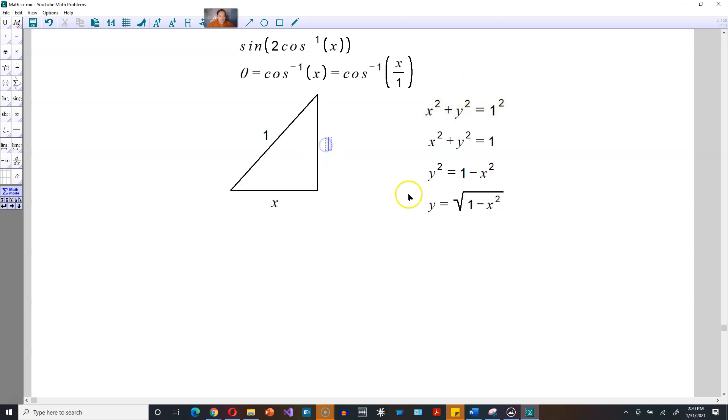So now this expression, square root of 1 minus x squared, labels the vertical side in the triangle, which means the following.